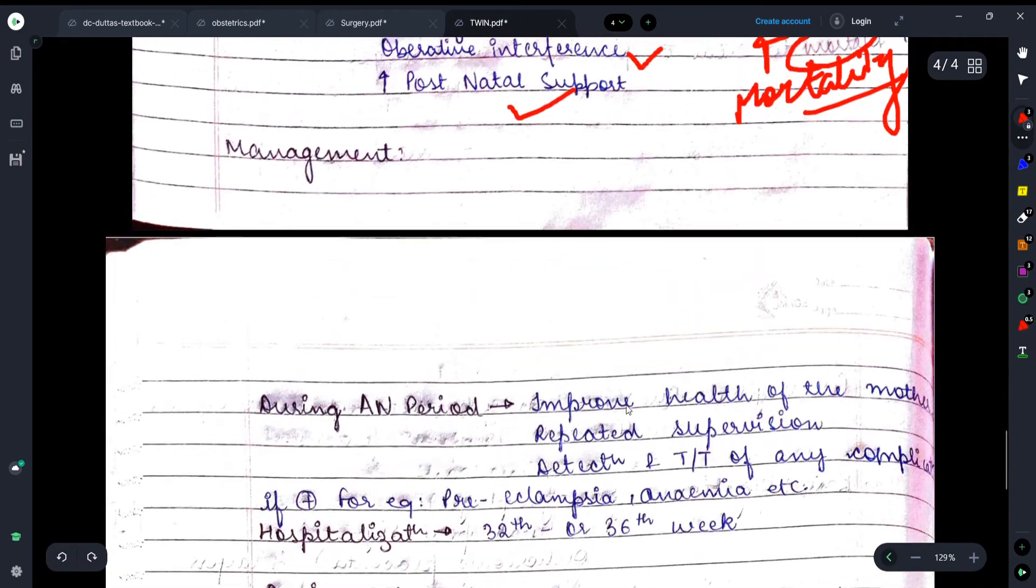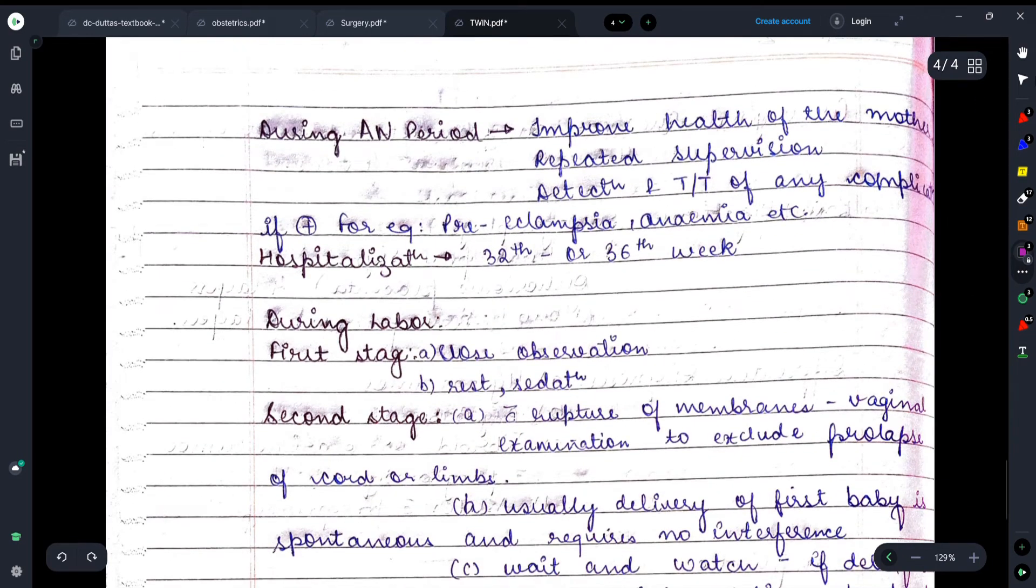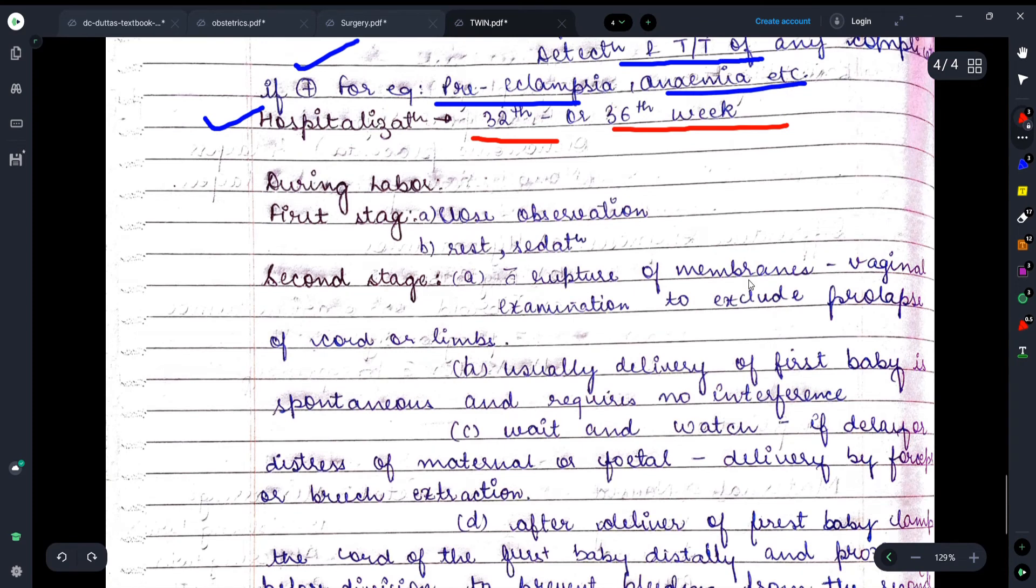Now let's move on and talk about the management - what management we have to do during twin pregnancy. Here it's mentioned that during AN period, that means during antenatal period, we have to improve the mother's health. We have to do repeated supervision to see whether both twins are growing properly or not. Also, we will do detection and treatment of any complication if present, for example preeclampsia or anemia. If such problems are seen in pregnancy, the female should be hospitalized around 32-36 weeks, because there are chances that the delivery may be preterm, so that's why this is discussed.